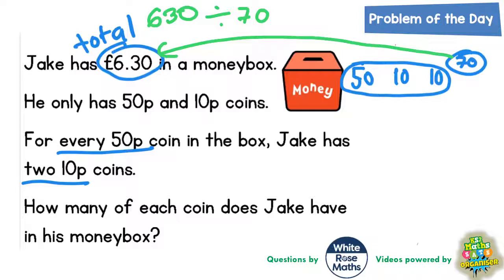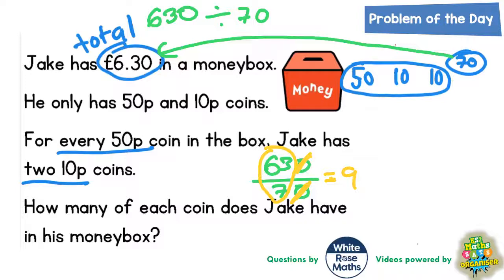We can do this as a division: 630 divided by 70. When doing a division, the zero on the bottom can cancel out the zero on the top, leaving us with 63 divided by 7. 63 divided by 7 is 9. So 9 lots of 70 pence — 9 times 70p — gives us £6.30.